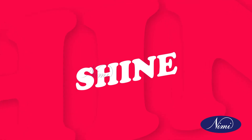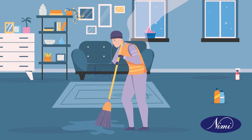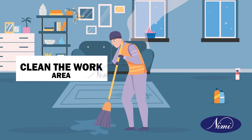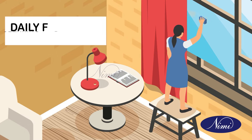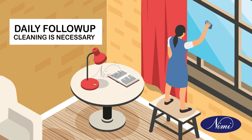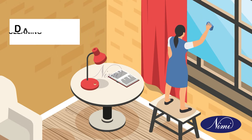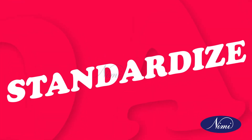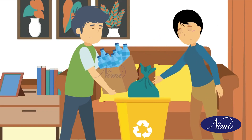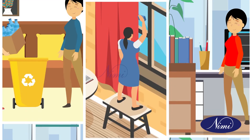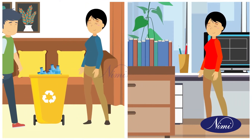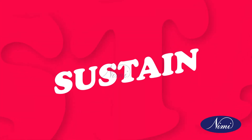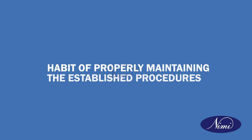The third S is shine. Once the items are organized, the next step is to thoroughly clean the work area. Daily follow-up cleaning is necessary to sustain this improvement. The fourth S standardizes the method to maintain the first three pillars of S by making it habitual in the workplace. The fifth S is sustain — making a habit of properly maintaining the established procedures.